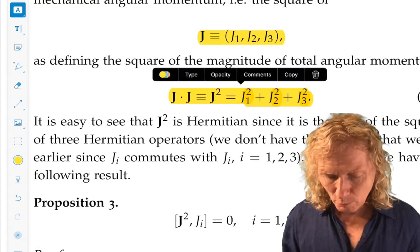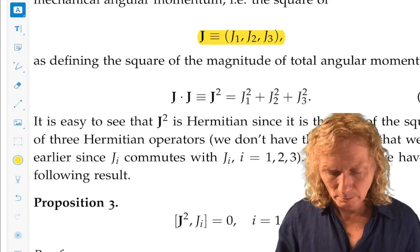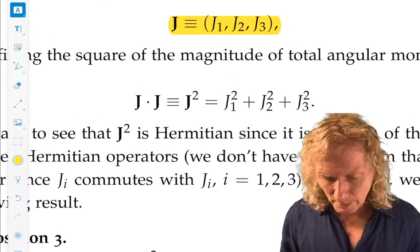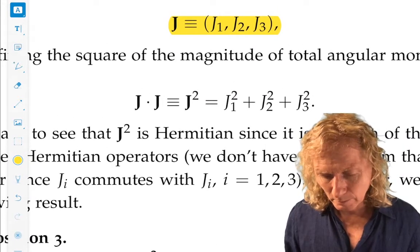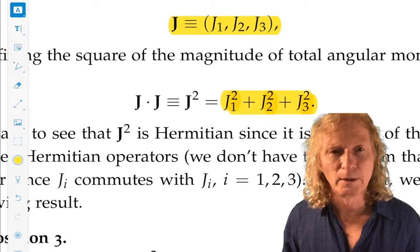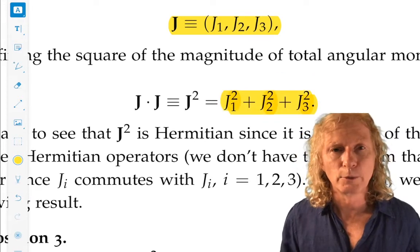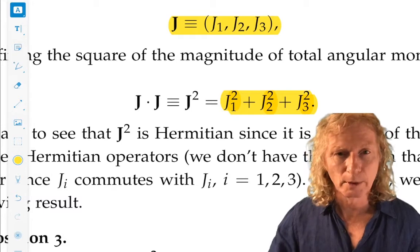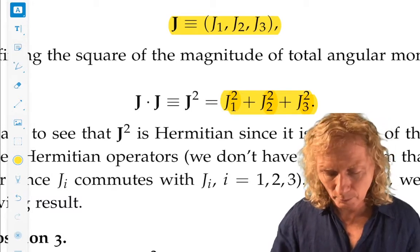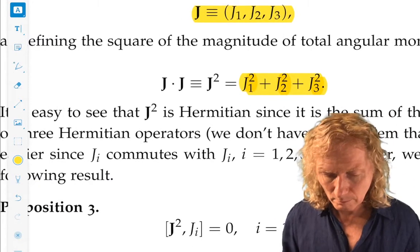If J1 and J2 and J3 are Hermitian, then this quantity is clearly Hermitian, because it's the sum of three Hermitian operators. The product of Hermitian operators is Hermitian.